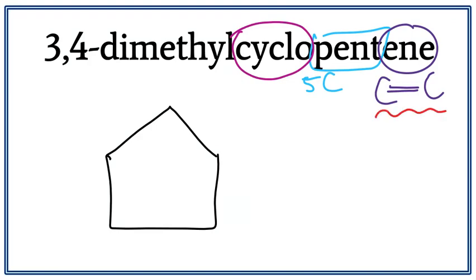Now we have to add the double bond. Since we don't see a number for the double bond, we assume that it is on the first carbon, meaning it is between the first and the second carbon.